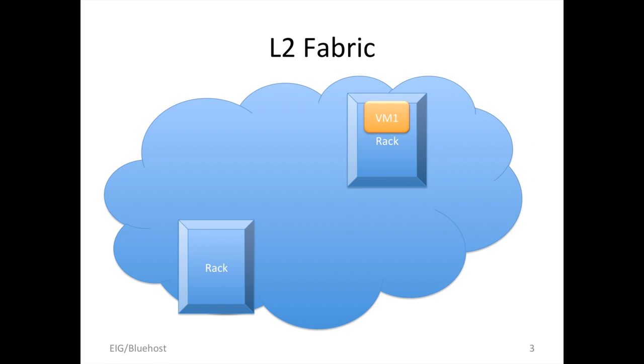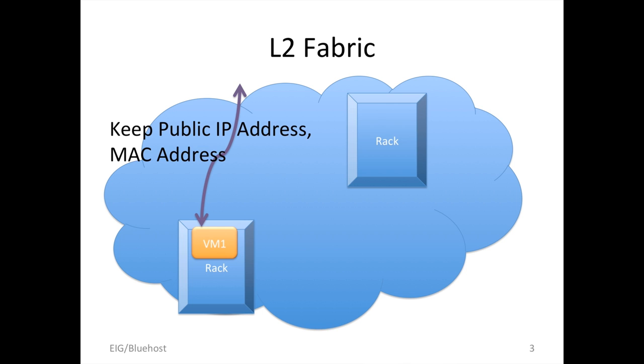Let me talk about our L2 fabric data infrastructure. When a VM is migrated to another rack, the requirement is this: we don't want to ask the customer to change their public IP. We need to keep that. And we still need to achieve QoS, isolation, ACL, firewall — everything. This talk consists of two main parts: what we've done and what we are planning to do in terms of SDN. For this part, we're already done, and I'm going to share all the detail-level algorithms and mechanisms for how we achieve these goals.